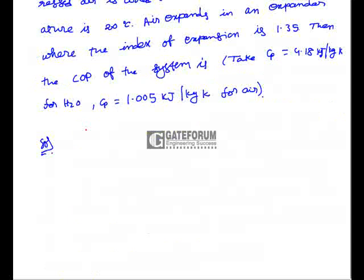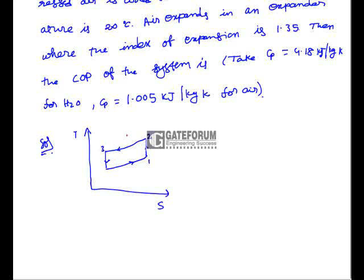The air refrigeration system works on the reversed Brayton cycle or Bell-Coleman cycle, represented on a T-S diagram. For refrigeration we use the reversed Brayton cycle: 1 to 2 is compression, 2 to 3 is heat rejection, 3 to 4 is expansion, and 4 to 1 is heat gained by refrigeration — that is, heat extracted from the room, giving the refrigeration effect. Refrigeration effect = mCp(T1 − T4).